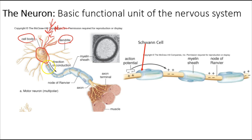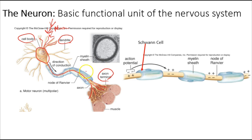The message that the neuron is trying to communicate will be passed along the axon, which is the long extension from the cell body. Eventually that axon terminates at the end, where — very similar to the dendrites — you'll have these synaptic terminals. In this case we're synapsing on muscle, but you can also synapse on other neurons to communicate information.